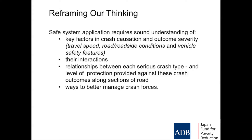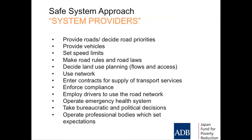We have to reframe our thinking — not just what are the key factors in crashes, but what are the key factors that lead to the severity of outcome? That's the bit we haven't looked at previously. What causes a crash to have a severe outcome, and what can we do about it at a system level? How do travel speed, the road and roadside, and the vehicle interact? Because it's not just one of them — you can make slight improvements in all three and get a very substantial combined benefit. System providers have to do much more.